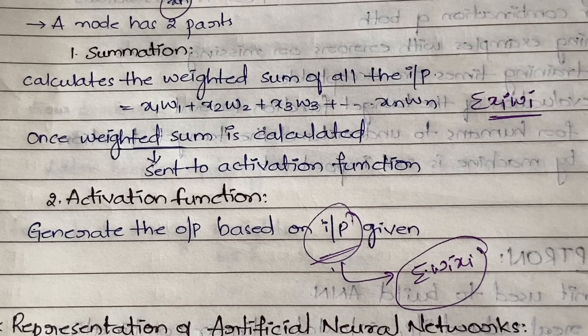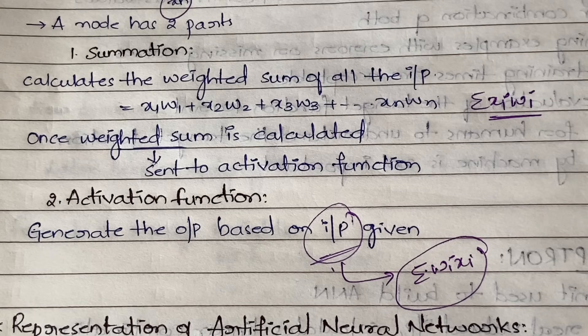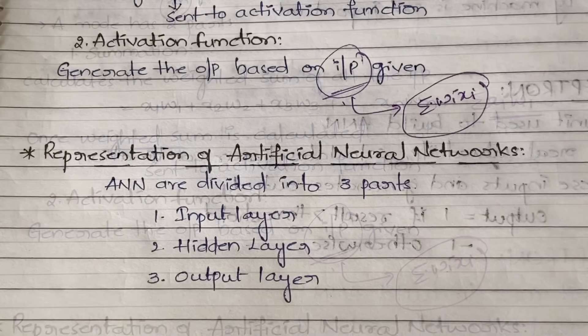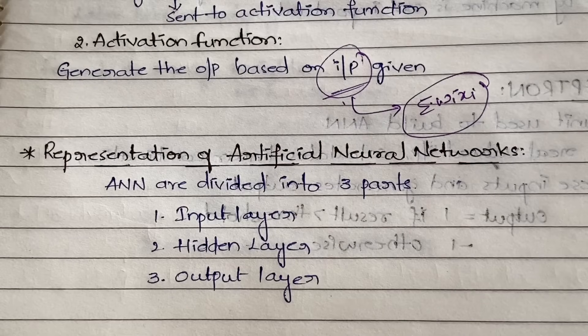Once you get the weighted sum sigma(xi·wi), you send it to the activation function. The activation function is denoted by f, and it generates the output based on the weighted sum input given to it. Just as the brain collects inputs from all neurons and processes them into a combined response, here all inputs are summed together and given as a combined input to the activation function, which then produces the respective output. A node — the artificial neuron — has two parts: summation and activation function.